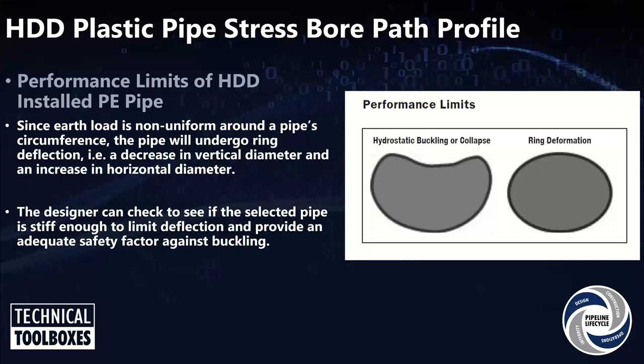Since the earth load is non-uniform around a pipe, we get ring deflection — a decrease in vertical and an increase in horizontal, the egg shape mentioned earlier. The key for the designer is to make sure that pipe is stiff enough to limit that deflection and give you a safety factor against buckling during pullback. With plastic pipe, you have to look at how the pipe will behave during pullback and its safety factor against buckling, and also during the life of the pipe, especially under roads, railroads, or anything that puts a lot of load on it.